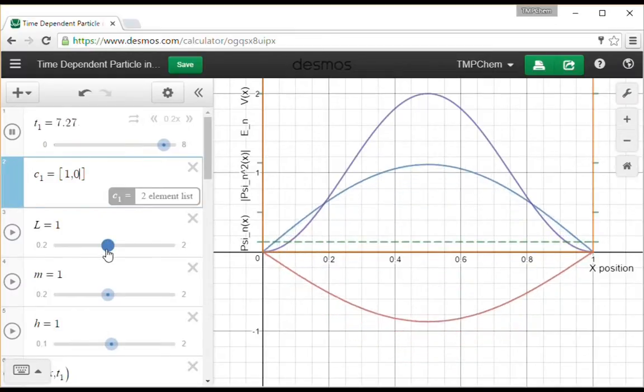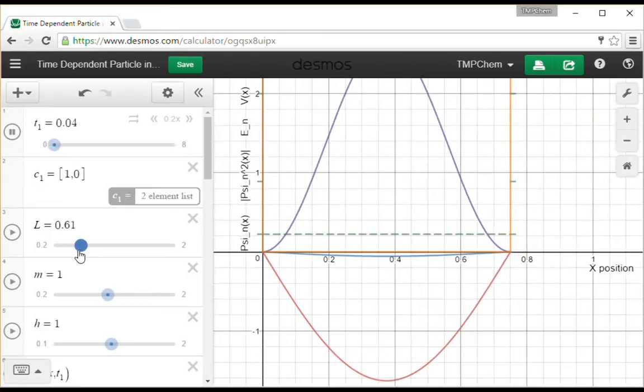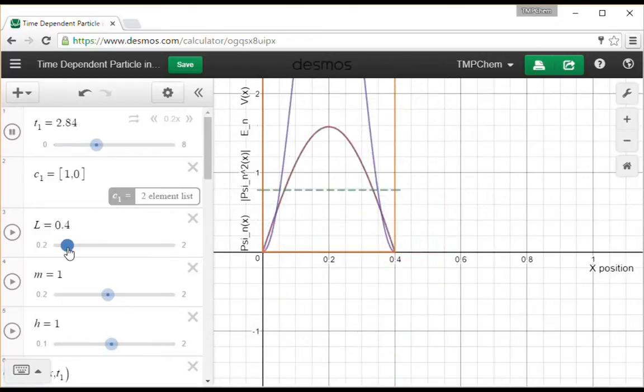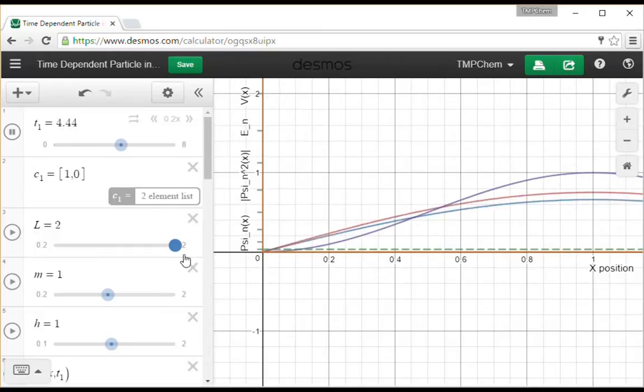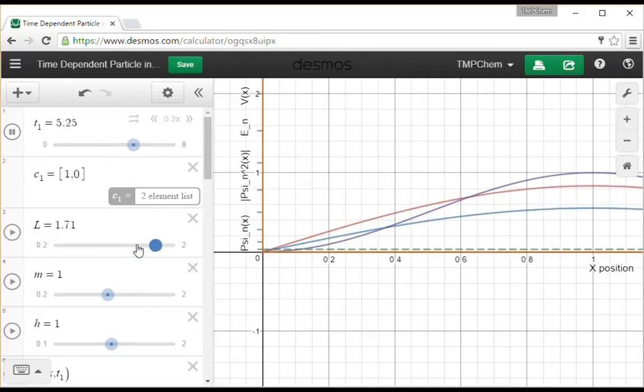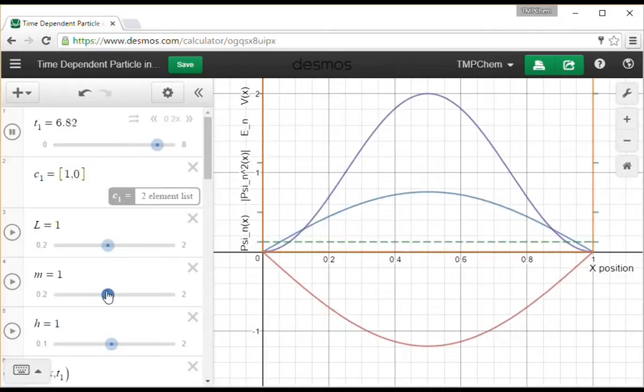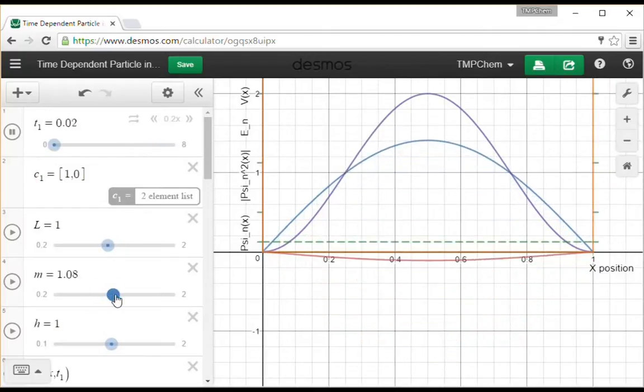Once again, as before, if I change the value of L, the energy goes up and the oscillation goes faster because the oscillation depends on the energy. Energy goes up, frequency of oscillation goes up. Energy goes down, frequency of oscillation goes down. So length of the box still has a similar effect.